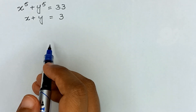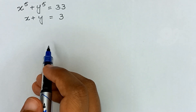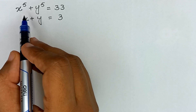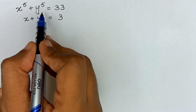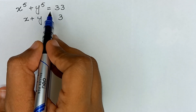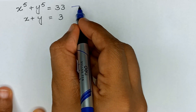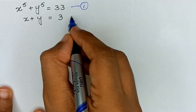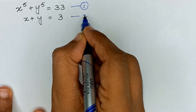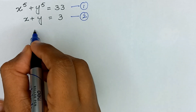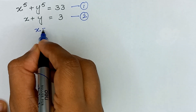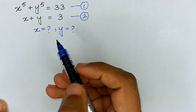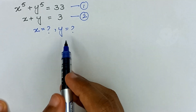Assalamu alaikum friends, welcome back to my channel, hope you all are fine. Today we will solve the question: x raised to the power 5 plus y raised to the power 5 is equal to 33 — this is equation number 1 — and x plus y is equal to 3 — this is equation number 2. We have to find the values of x and y.